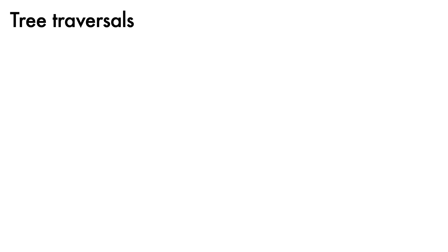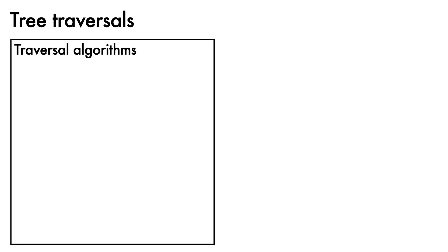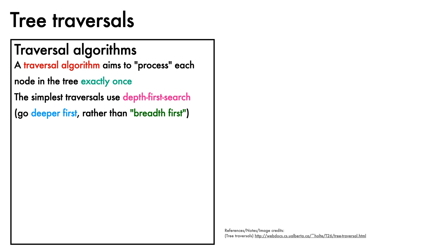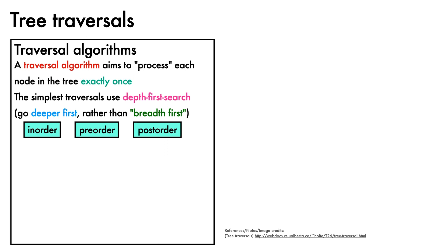Unlike arrays where the order for processing elements is fairly obvious, with trees there are many reasonable ways to process the elements. For this purpose, a number of traversal algorithms have been designed, which process each node in the tree exactly once in a particular ordering. The simplest traversals adopt depth first search, in which the algorithm visits nodes by first going deeper rather than broader, though breadth first search is certainly possible. The three most common depth first traversal orderings are known as in-order traversal, pre-order traversal, and post-order traversal.